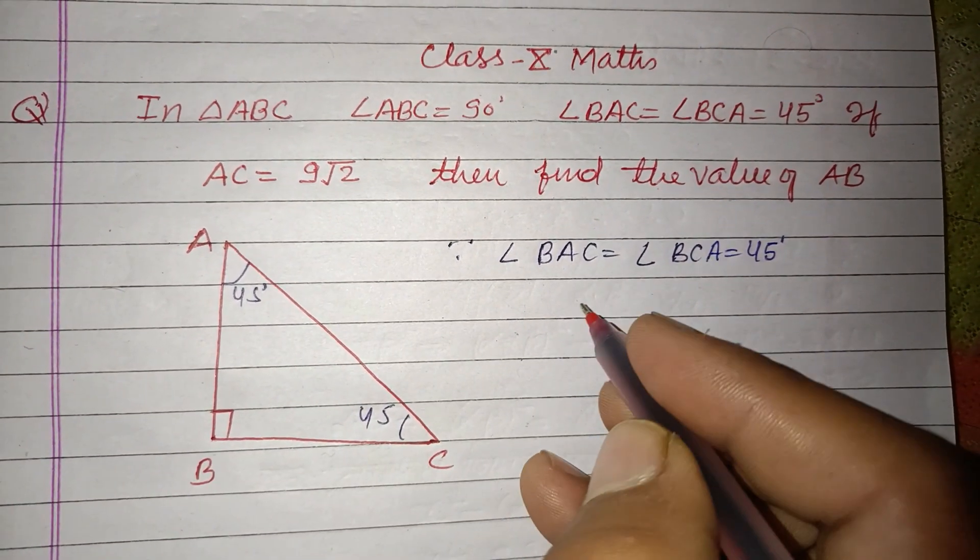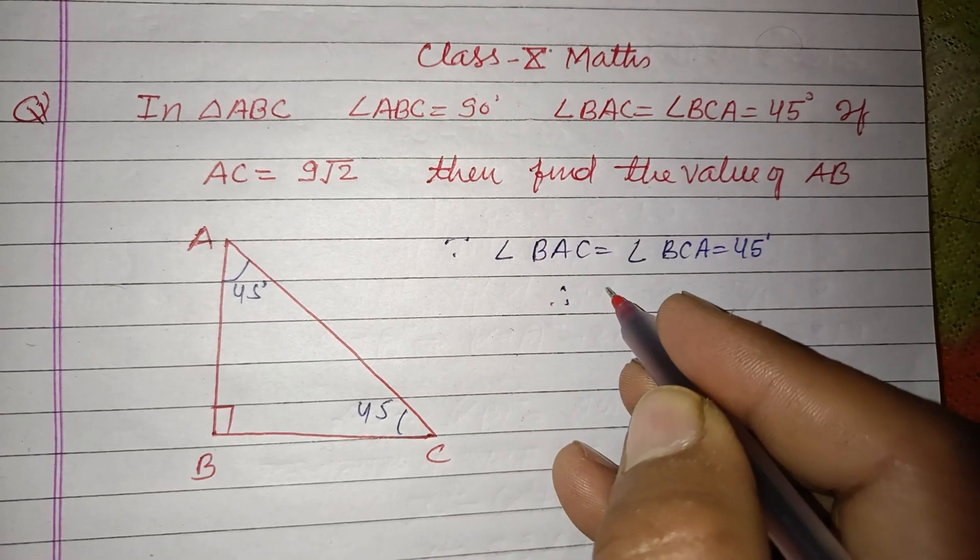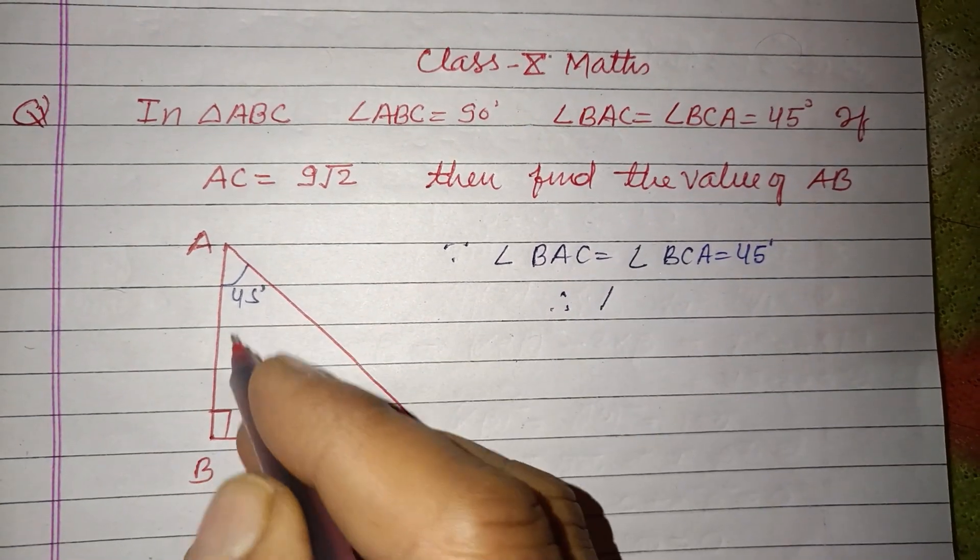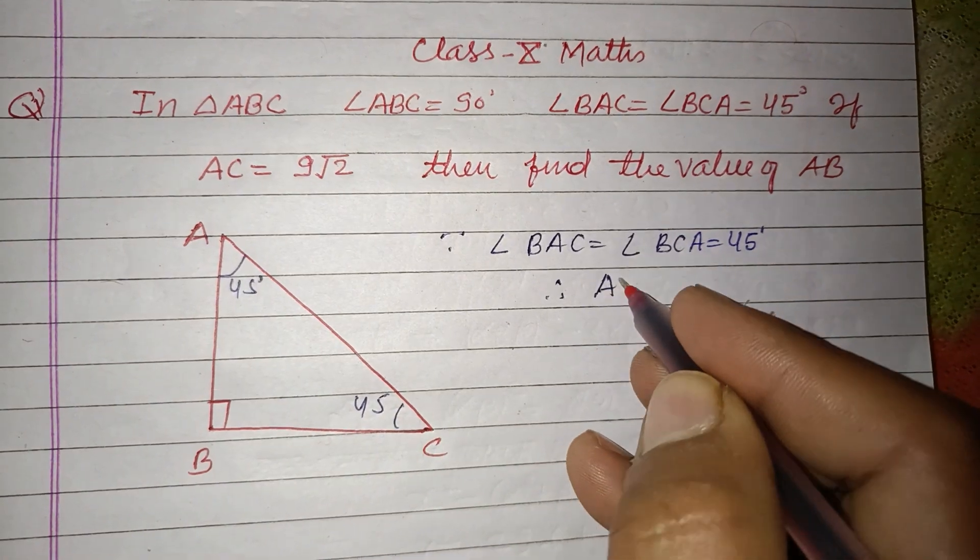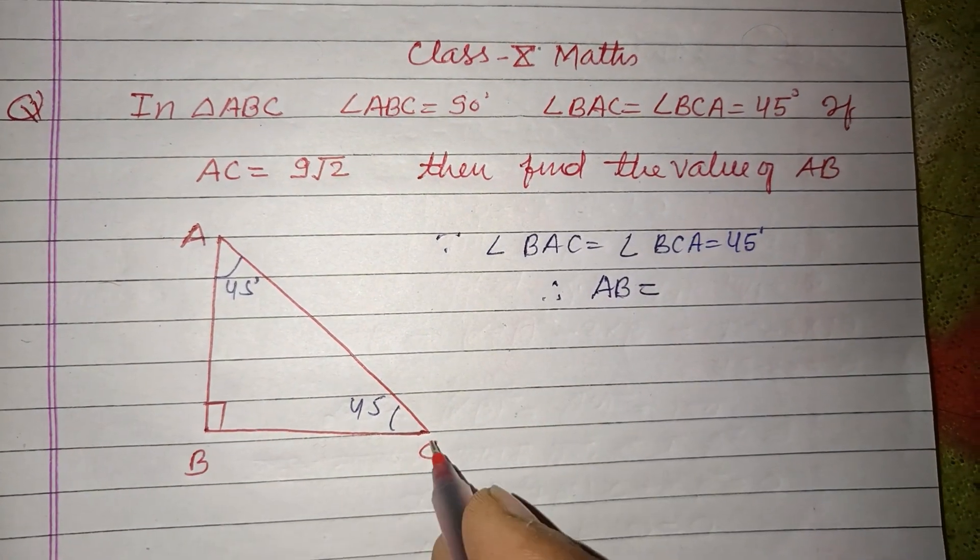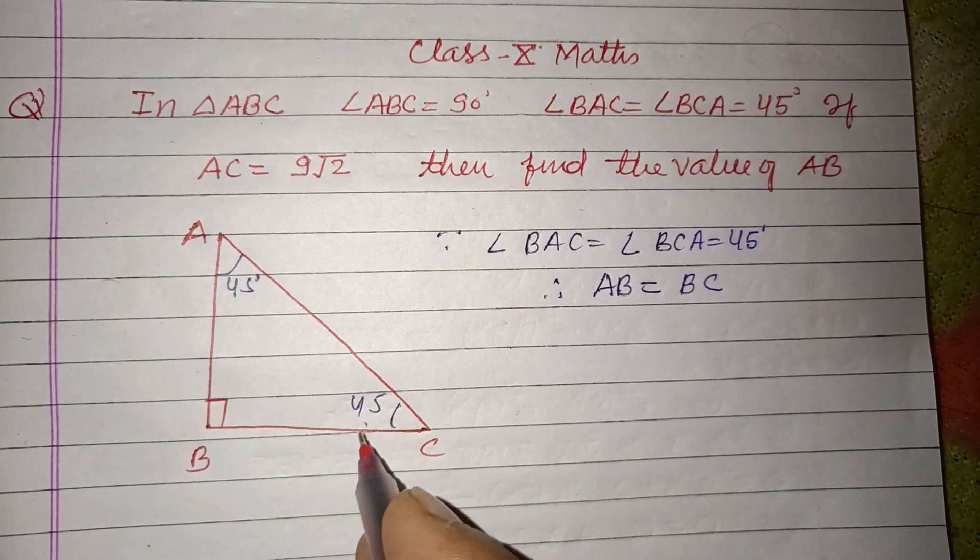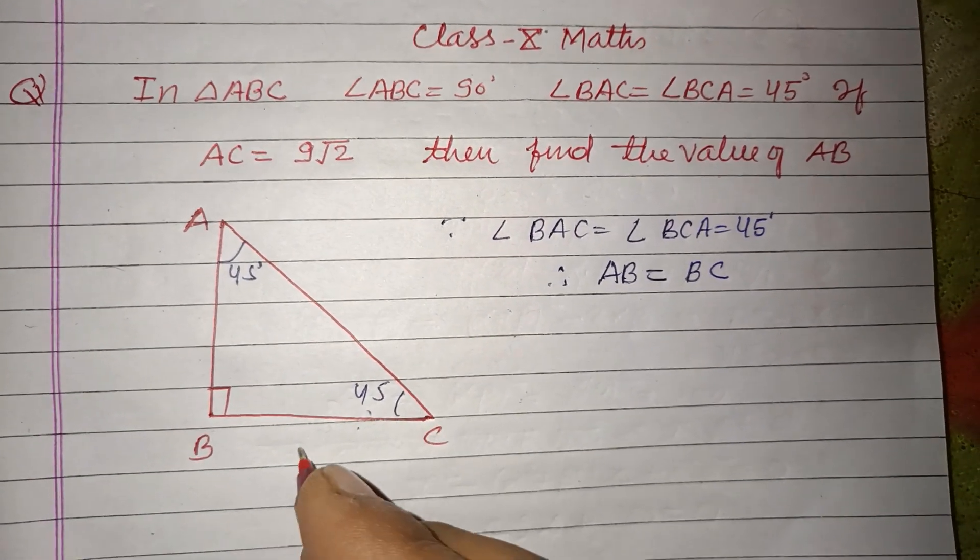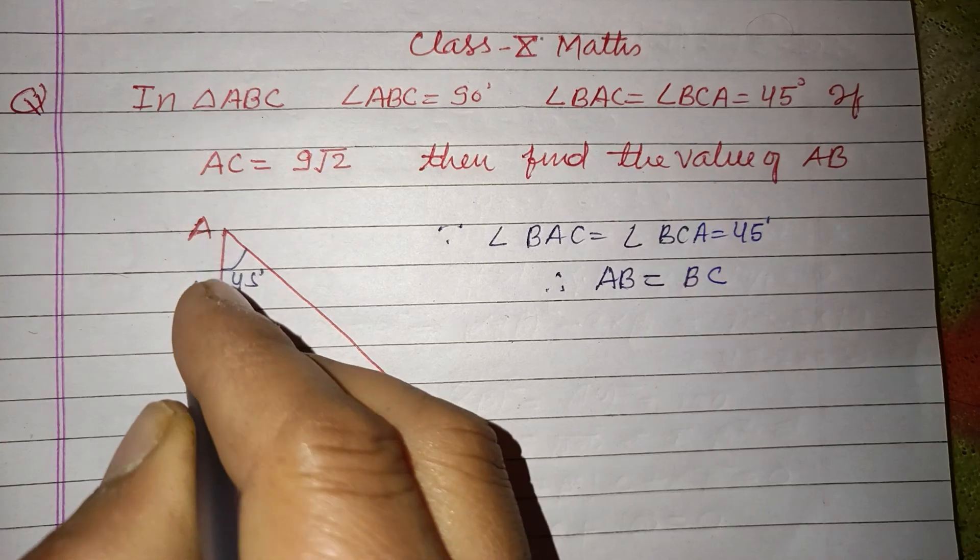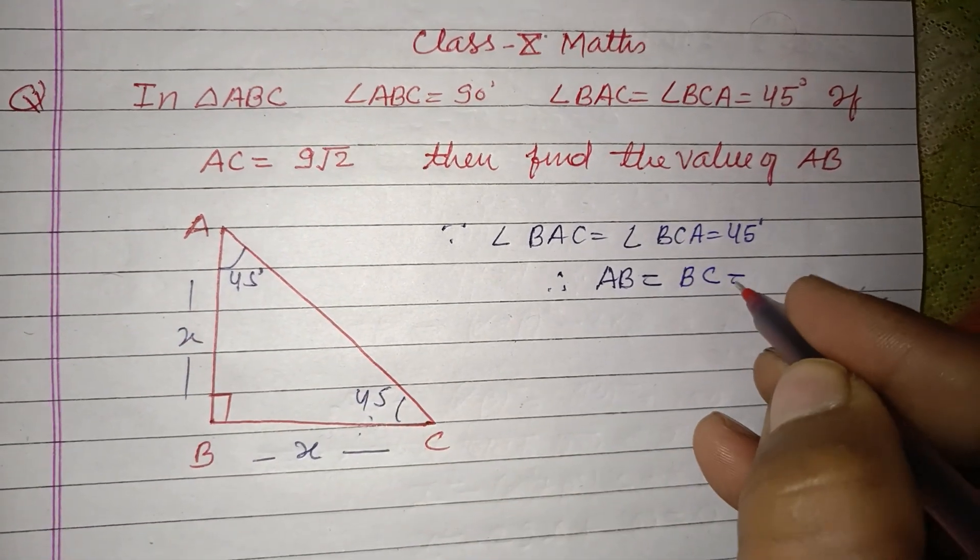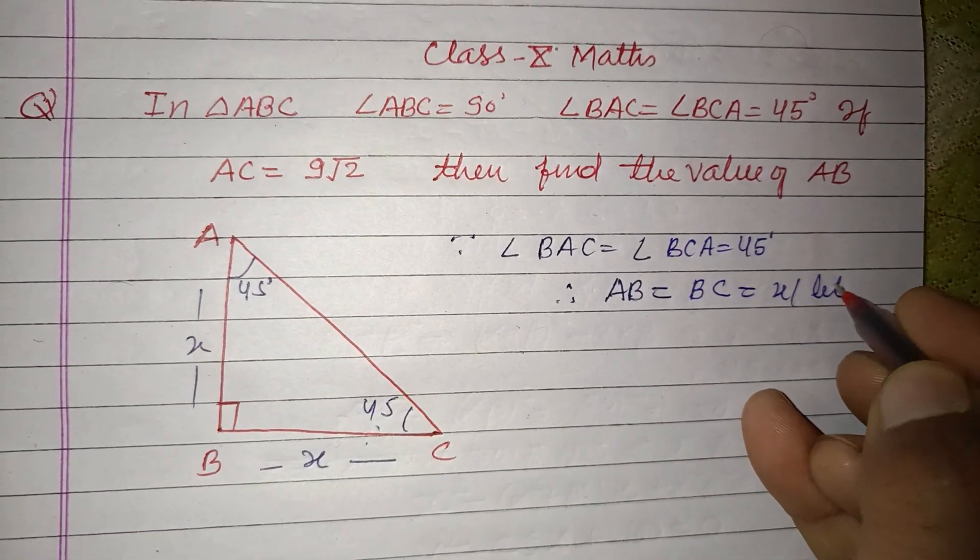Okay, since the angles are the same, therefore side AB is equal to side BC, because if opposite angles are the same, then their sides are also the same. So let it be x, then this is also x. Let x, now.